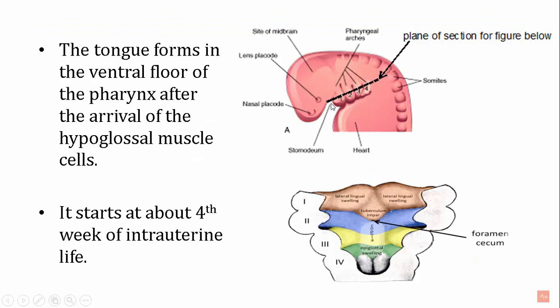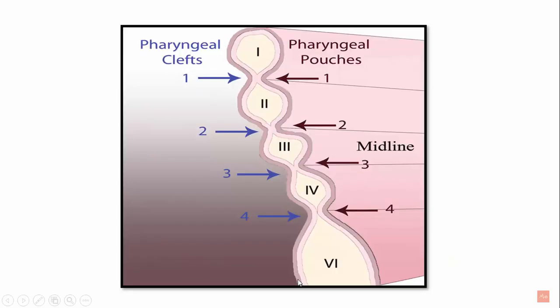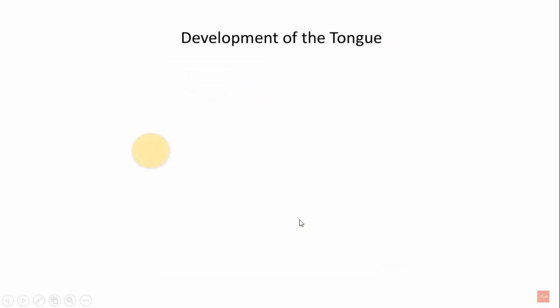Now, let's cut the pharyngeal arches in a plane of section to see how it appears internally. The tongue forms in the ventral floor of the pharynx after the arrival of the hypoglossal muscle cells, starting at about the fourth week of intrauterine life. The outer depressions are called pharyngeal clefts and the inner depressions are called pharyngeal pouches, present in between each pharyngeal arch.